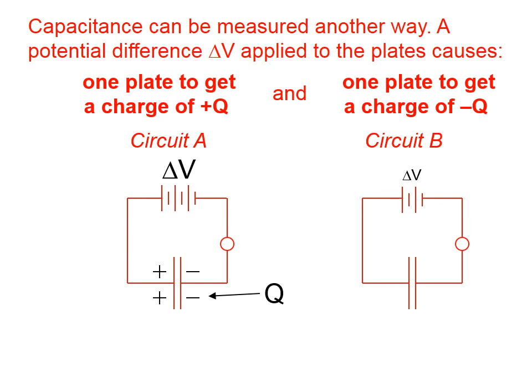The voltage difference applied in circuit A is larger than the voltage difference applied in circuit B. There's a certain amount of charge moved from one plate to the other in circuit A. There's a smaller amount of charge moved in circuit B.